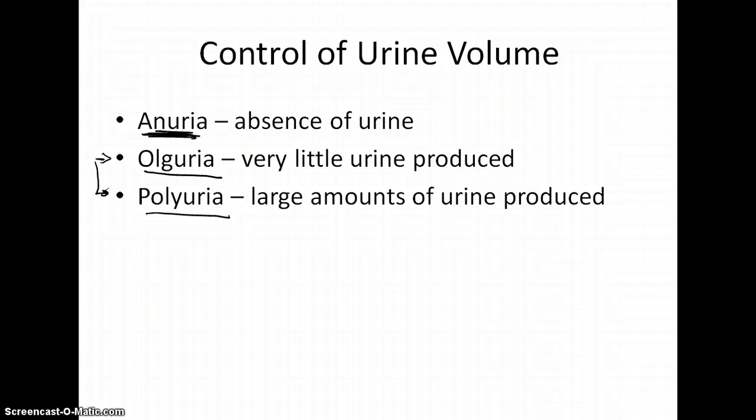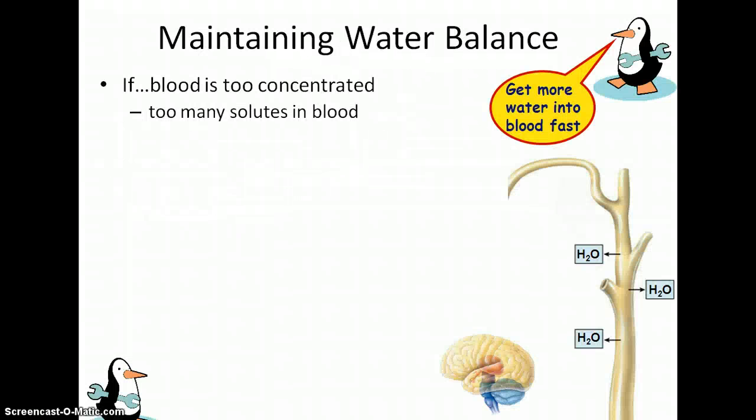We can somewhat regulate how much urine we produce through the use of hormones. The first scenario: if our blood is too concentrated — too salty, not enough water — we need to get water into that blood fast and tell our nephrons not to waste any water, perhaps because we're dehydrated or have consumed a lot of salt.